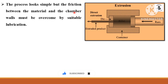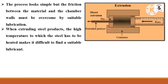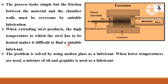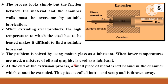The process looks simple, but the friction between the material and the chamber walls must be overcome by suitable lubrication. When extruding steel products, the high temperature required makes it difficult to find a suitable lubricant. This problem is solved by using molten glass as a lubricant for steel. When lower temperatures are used, a mixture of oil and graphite is used as the lubricant. At the end of the extrusion process, a small piece of material is left behind in the chamber that cannot be extruded.